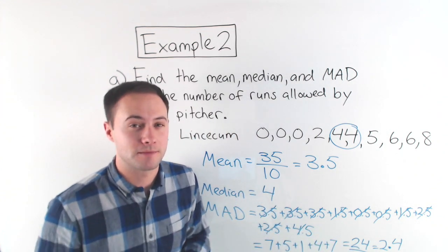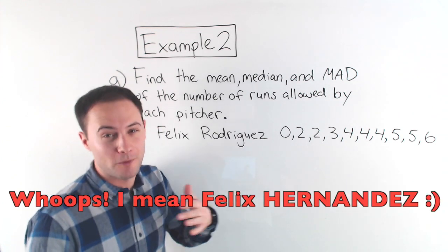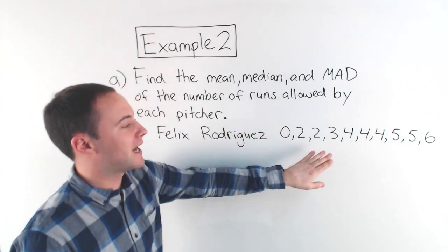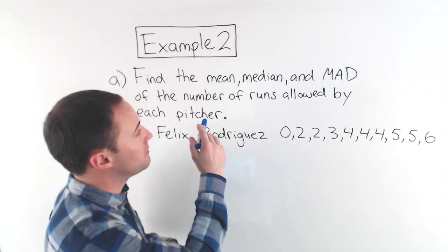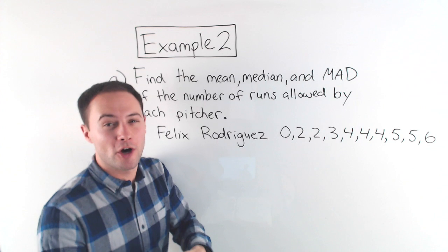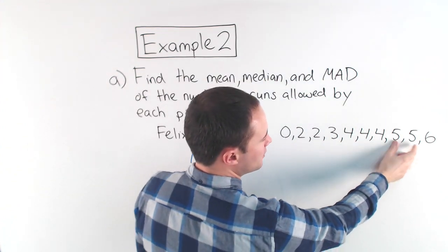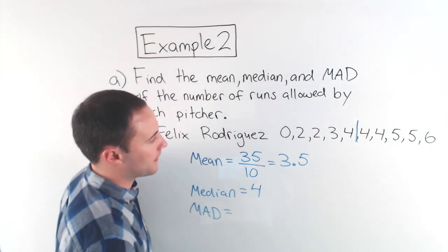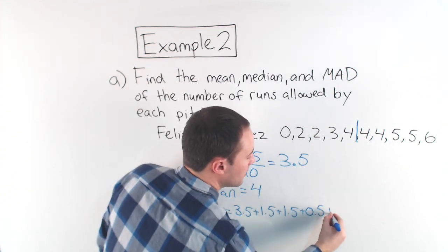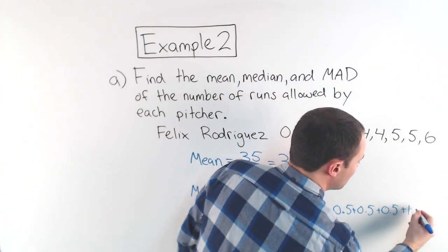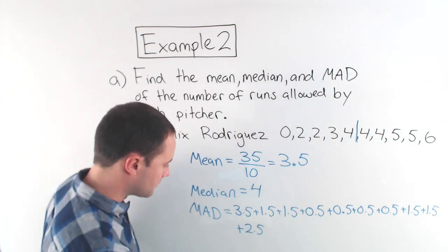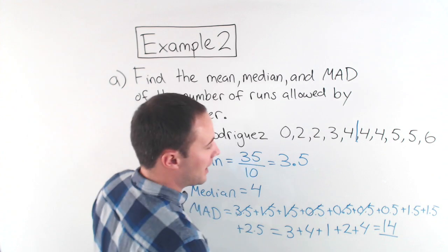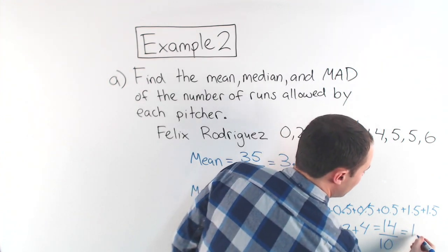Now let's do the same thing for Felix Hernandez, a Seattle Mariner — one of my favorite pitchers — with runs allowed over 10 games. Adding everything up and dividing by 10 also gives a mean of 3.5, and the median is also 4. For the mean absolute deviation, the mean is again 3.5: the 0 is 3.5 away, the values near 3.5 contribute smaller distances. This gives a mean absolute deviation of 1.4.